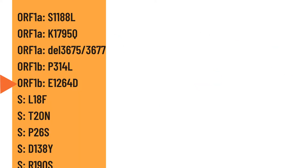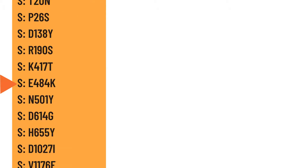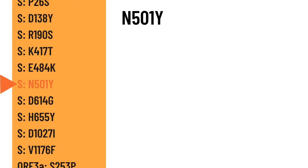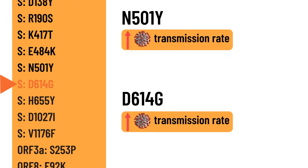From the list of mutations on the spike protein, a few mutations have been extensively studied to understand their impact. The most notable examples are the N501Y and D614G mutations, which are common in other variants of concern including the alpha and beta variants. The N501Y mutation is the main cause of the increase in transmission rate of the virus, which led to spikes in COVID-19 cases. To know more about the impacts of N501Y and D614G, feel free to watch the video for the alpha variant on this channel.